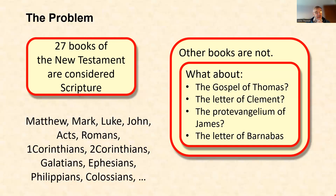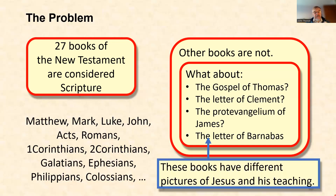Part of the problem is that those books have a different picture of Jesus. Jesus's teaching in the Gospel of Thomas is quite different from his teaching in the Gospels we have. For example, the Gospel of Thomas contains no idea that Jesus died on the cross for our sins — it doesn't even mention the death of Jesus at all. The idea is that Jesus saves because he brings an esoteric teaching which frees the spirit — a quite different idea.